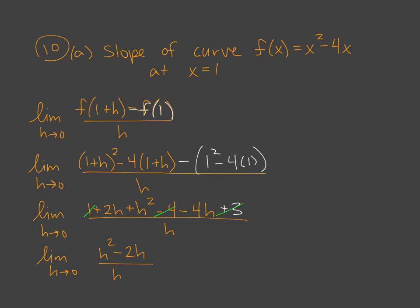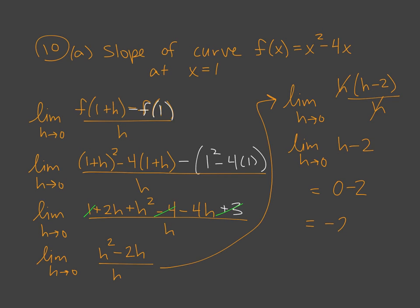Again, if we direct substituted in 0 for h right now, we'd have 0 over 0, which is indeterminate form. So what we have to do is factor and cancel. So the limit as h goes to 0, I'm going to factor the numerator. The GCF of h will come out front. We're left with h minus 2 all over h. Now the canceling happens. Now we can direct substitute in. We have the limit as h goes to 0 of h minus 2. We can direct substitute in 0 for h and get a final answer of negative 2.